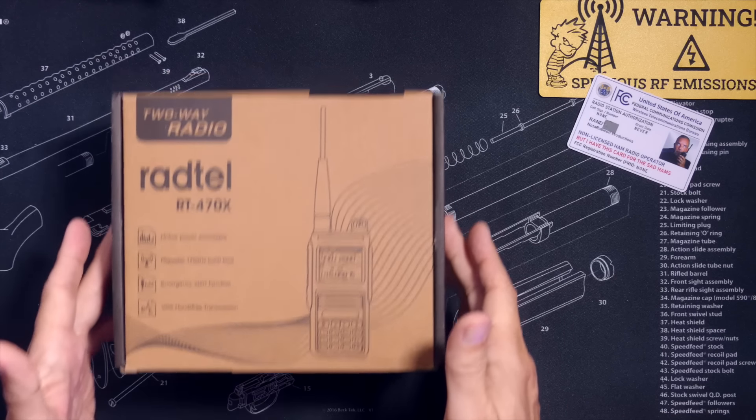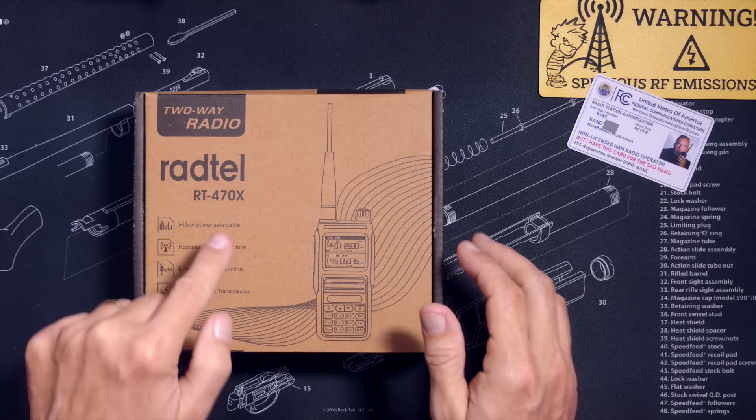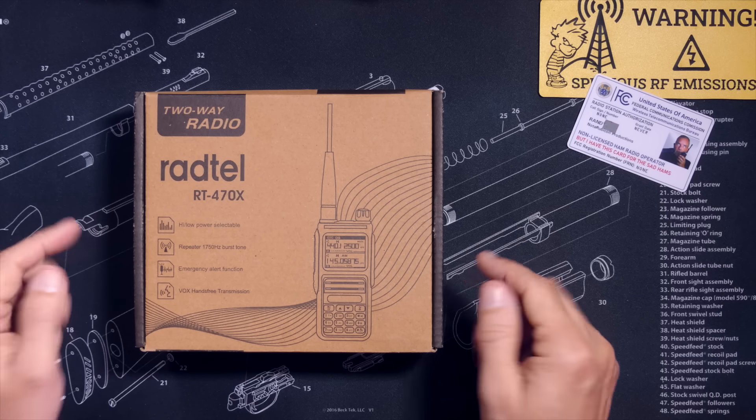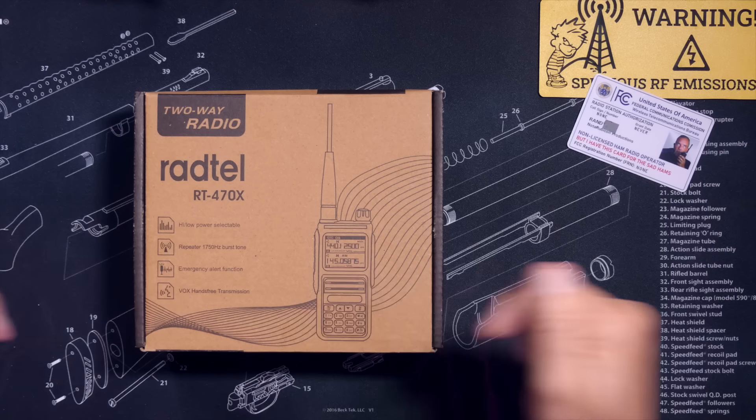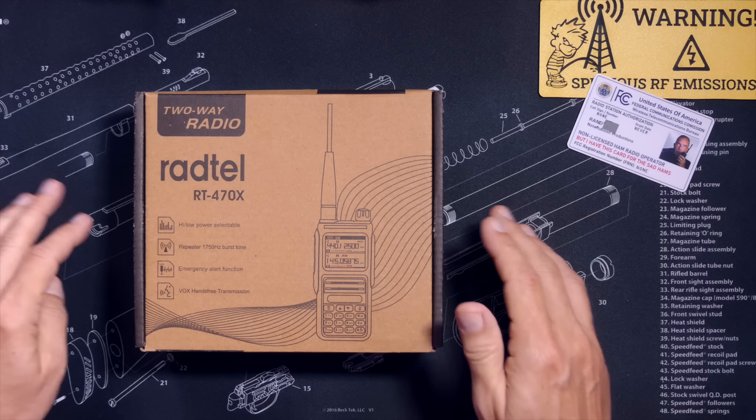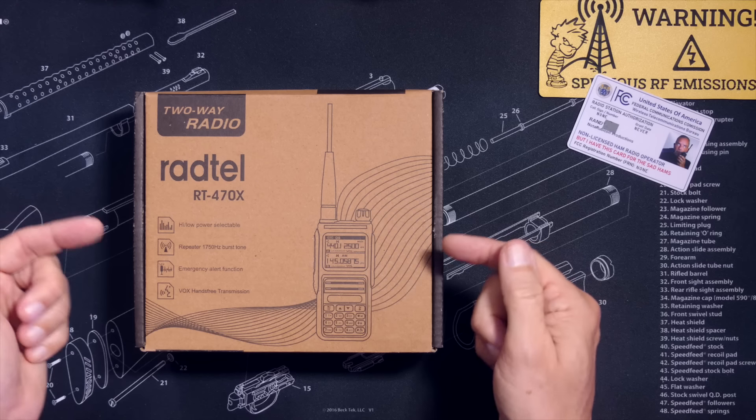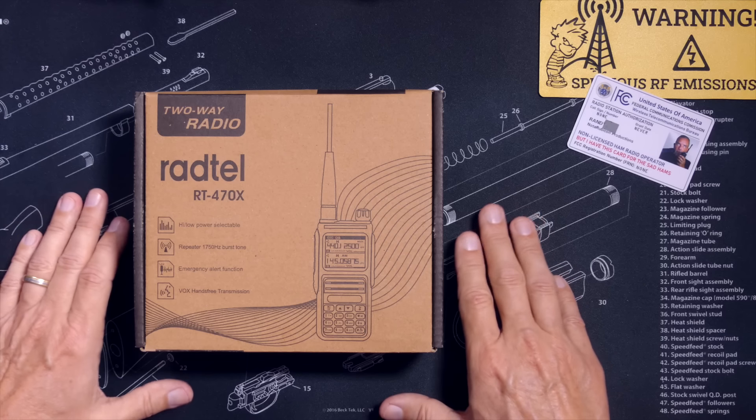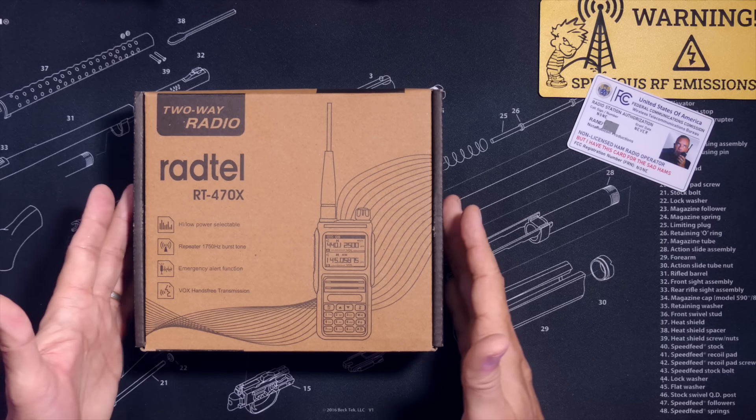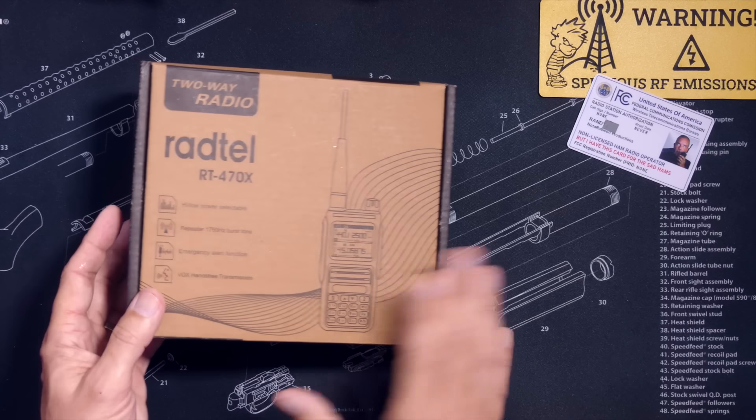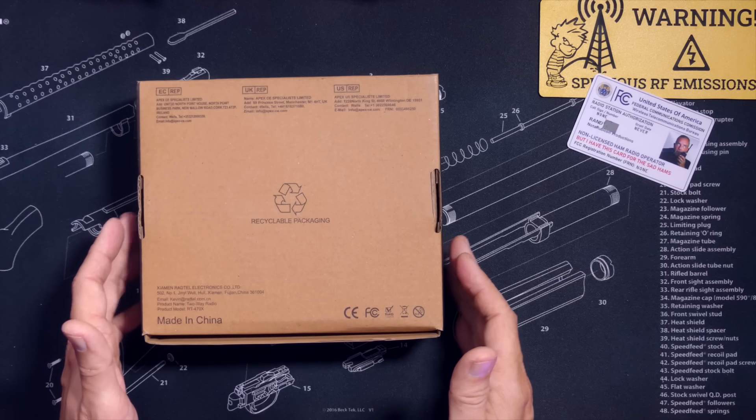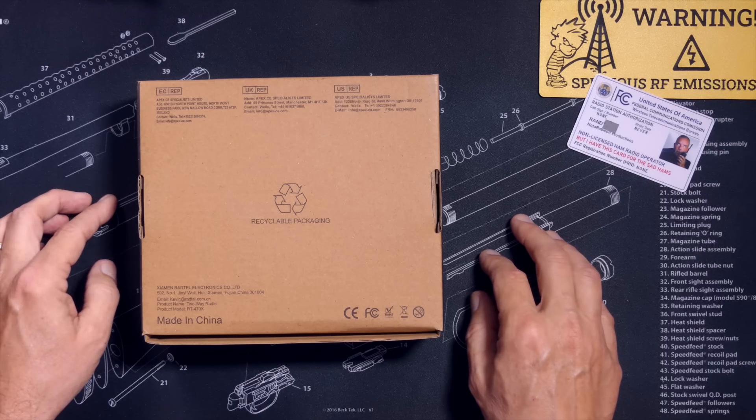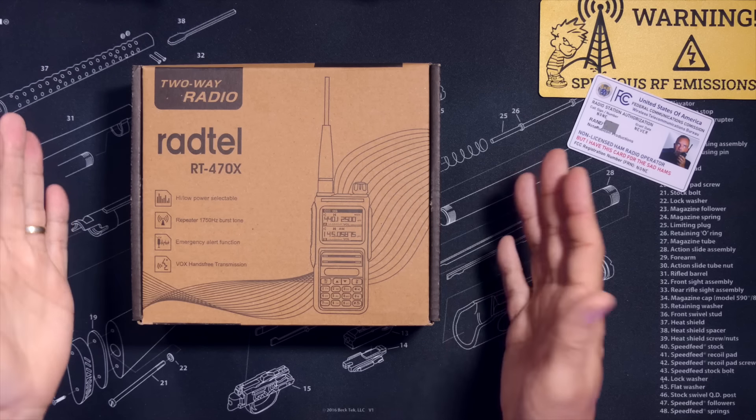Now, the price for the Radtel RT470X ham walkie-talkie radio is $37. Affiliate link below. And just to be clear, Radtel did not send me this radio for free. I paid full price for this radio using the monies collected from my supporting viewers. Those are the very kind and generous viewers that clicked the join or thanks button below.